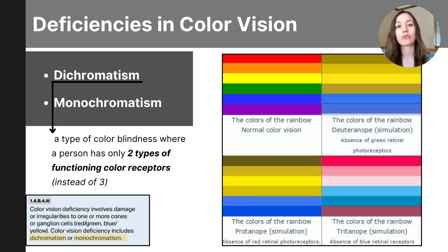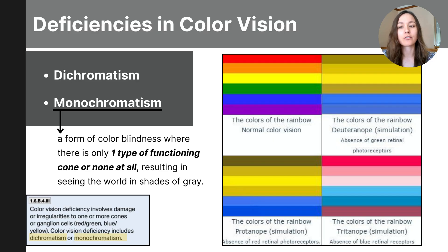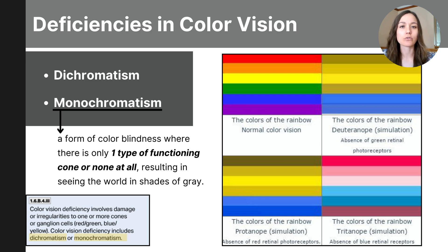Dichromatism also helps us better understand our theories of color. Missing one type of cone — either red, green, or blue — limits the ability to see certain colors, and in the absence of one cone, this disrupts the normal balance between opposing color pairs. Monochromatism is a form of color blindness where only one type of photoreceptor, or color none at all, are functioning correctly, resulting in seeing the world in shades of gray. Depicted on the screen are types of dichromatism, and you can see how by eliminating one of those cones, the individual loses the ability to perceive differences between colors.